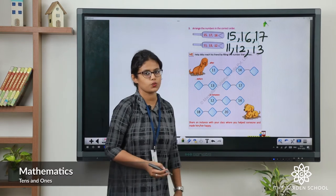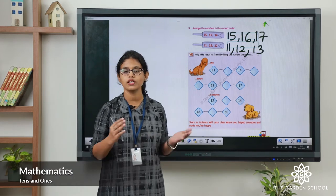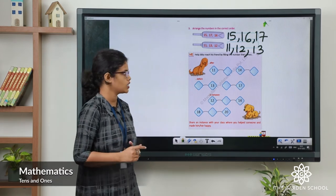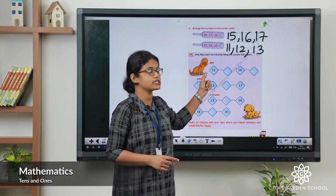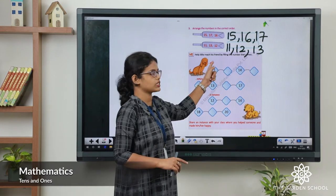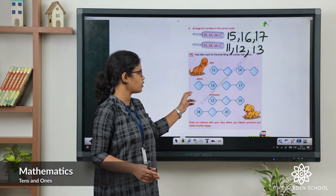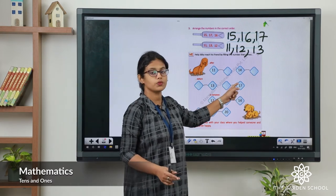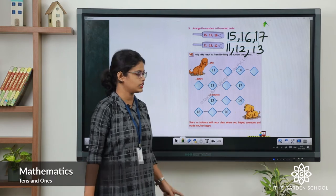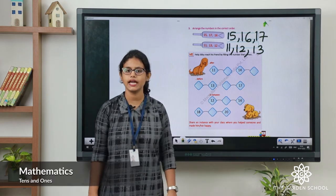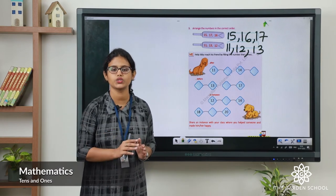This one we learnt in the last class about before, after, and between numbers. You have to write after numbers — which number comes after 11, which comes after 14. Also write numbers which come before 30, before 17. And between numbers — which number comes between 12 and 14, and between 18 and 20. You can do this and show it to your parents.